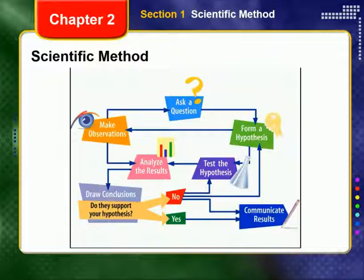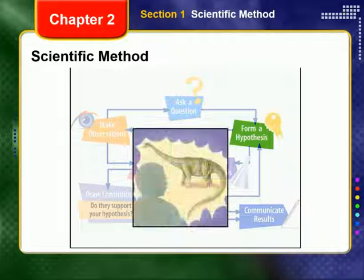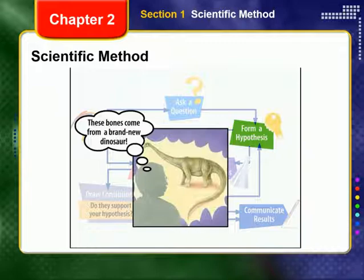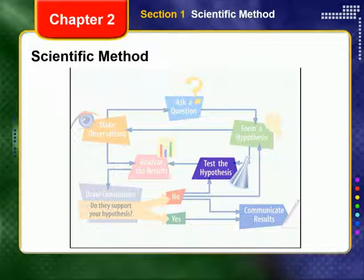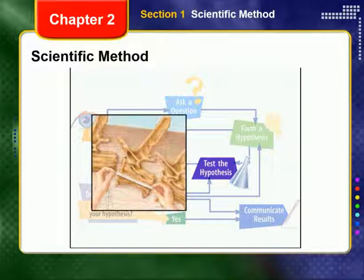A scientist often investigates a question by forming a hypothesis. The paleontologist in this example hypothesized that the bones he observed come from a type of dinosaur that had not yet been discovered. Scientists test hypotheses by gathering data that can help determine whether the hypotheses are valid or not. A test to support the hypothesis that a new dinosaur has been discovered might involve measuring many different parts of the newly discovered bones. Then these measurements can be compared with those of bones from known dinosaurs.